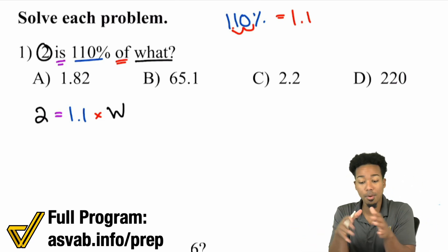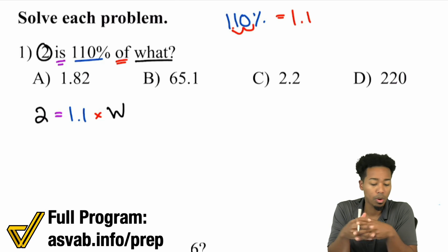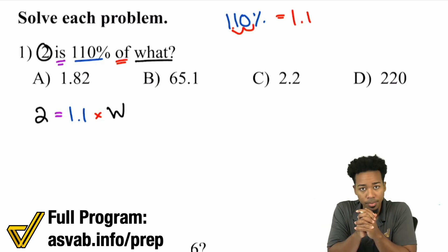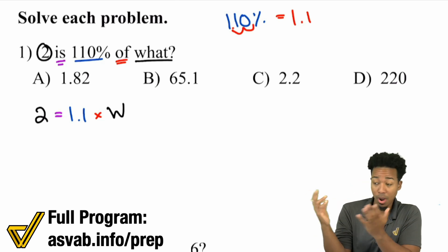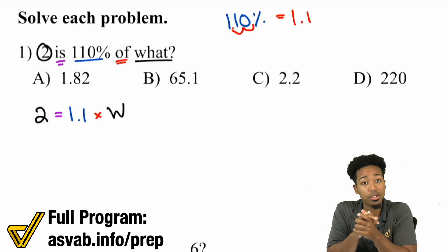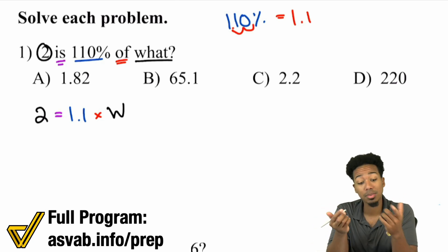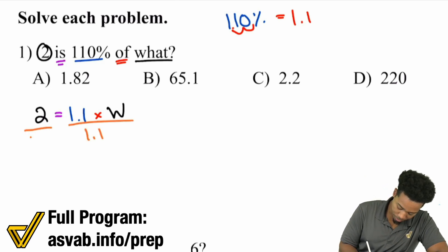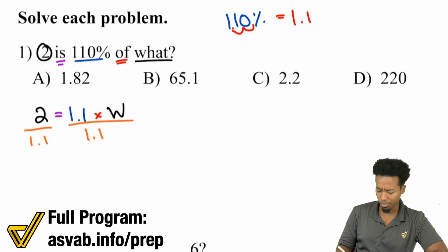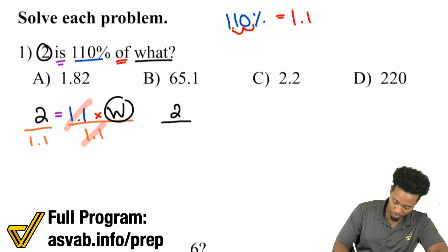You're looking at this and saying: 2 equals 1.1 times some number. So if you multiply some number by 1.1, you miraculously get 2. Work backwards — if I multiply this number by 1.1 and get 2, then I take that 2 and divide it by 1.1. Solving like an equation and doing the same thing to both sides, the 1.1 cancels and you get W by itself. Whatever 2 divided by 1.1 is equals W.